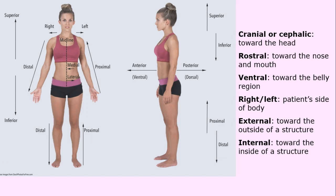A few more terms: cranial or cephalic means towards the head. Rostral means towards the nose and mouth — used frequently by nose and throat doctors. Ventral is towards the belly. Right and left always refer to the patient's right or left, not yours — if you're looking at a patient's right arm, it may appear on the left side of the image, but it is her right. External means towards the outside of a structure; internal means towards the inside. Take some time to review these because they're very useful.